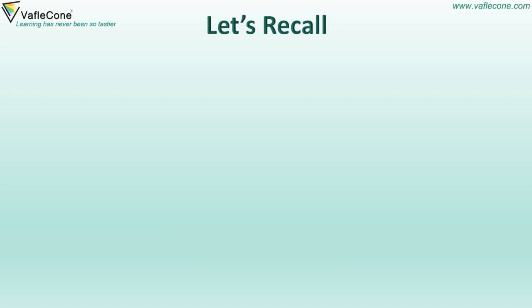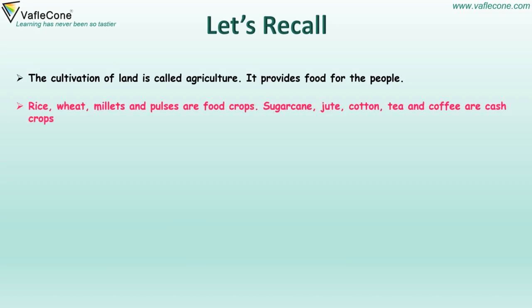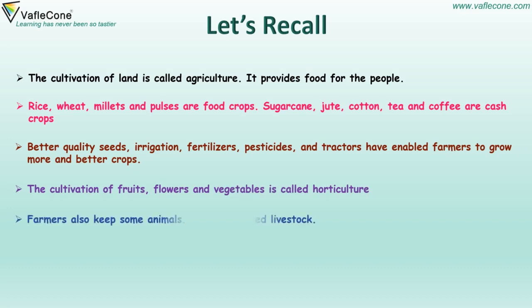Let's recall: the cultivation of land is called agriculture. It provides food for the people. Rice, wheat, millets and pulses are food crops. Sugar cane, jute, cotton, tea and coffee are cash crops. Better quality seeds, irrigation, fertilizers, pesticides and tractors have enabled farmers to grow more and better crops. The cultivation of fruits, flowers and vegetables is called horticulture. Farmers also keep animals — they are called livestock. Both marine and inland fishing are popular in India.